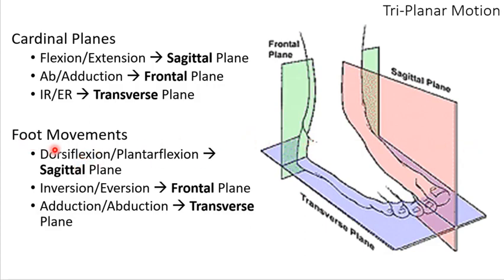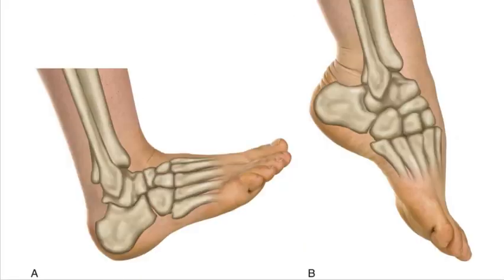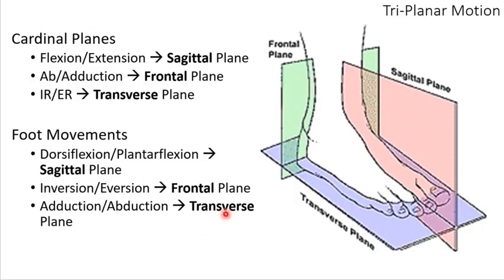In the sagittal plane, we don't call this flexion and extension of the ankle. We call it dorsiflexion — if the dorsal surface is moving closer — or plantarflexion, if the plantar surface is moving closer. In the frontal plane, instead of saying abduction and adduction, we use the term inversion and eversion. These are frontal plane motions. And for the transverse or horizontal plane, instead of saying internal or external rotation, the terms are adduction and abduction, because there isn't an axial rotation in the same sense.